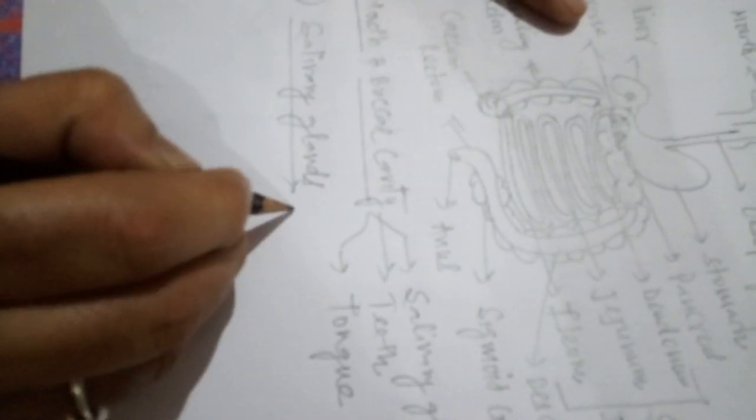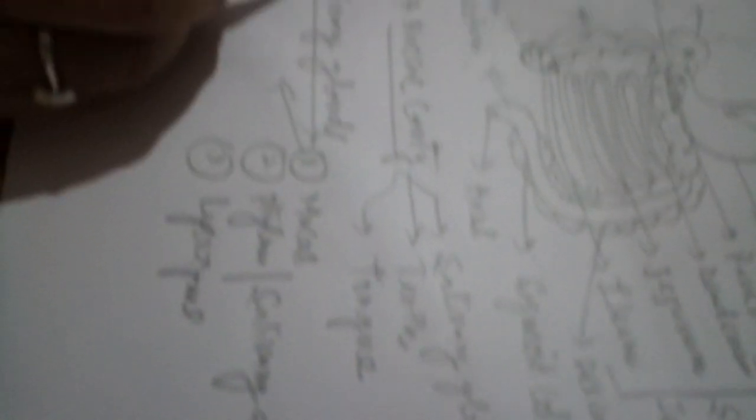The saliva secreted by the salivary glands contains three components: number one, mucus; number two, ptyalin, also known as salivary amylase; and number three, lysozyme. Mucus provides a sliding surface to engulf food easily in the digestive tract. When we chew food, we mix the mucus and saliva into the food, forming a bolus.